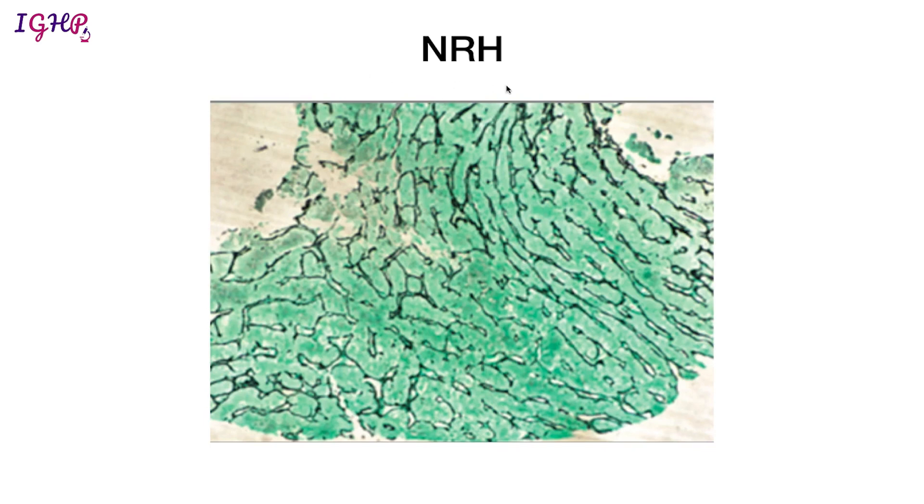Another vascular pathology is nodular regenerative hyperplasia (NRH), which usually occurs because of vascular remodeling. The liver is non-cirrhotic, but on ultrasound it may show nodular architecture. Biopsy will fall short of cirrhosis and will show formation of regenerating hepatocyte cords surrounded by atrophic hepatocyte cords. This is best delineated on a reticulin stain, which is the best stain for demonstrating nodular regenerative hyperplasia.